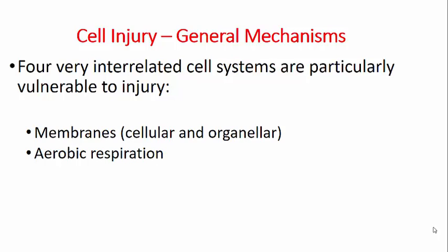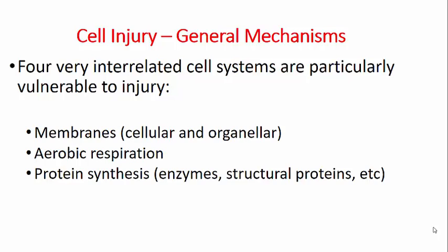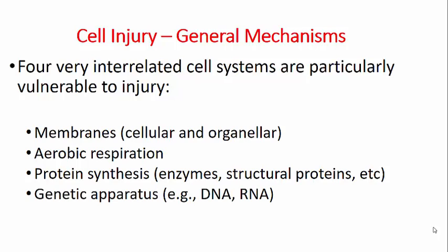The second is aerobic respiration, which is another important system very vulnerable to injury. The third is the entire protein synthesis apparatus — it could be in the form of enzymes or structural proteins. And the last one is the genetic apparatus, which includes the DNA material and the RNA. These are more prone for injury.